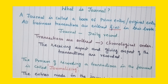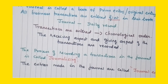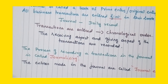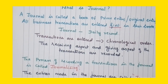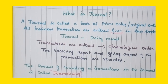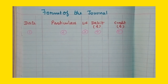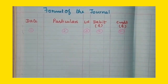Transactions are recorded date-wise and month-wise, noting both the receiving aspect and the giving aspect of each transaction. In the process of recording transactions in the journal, this is called journalizing, and the entries made in the journal are called journal entries.